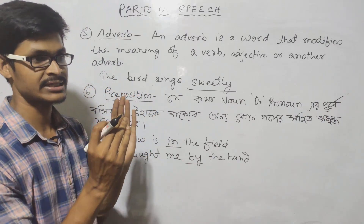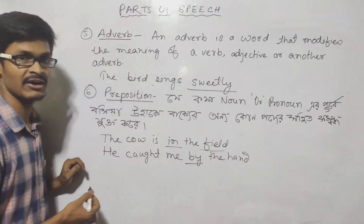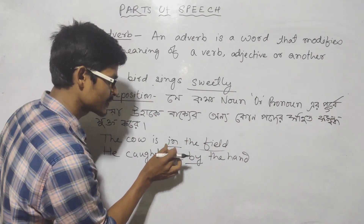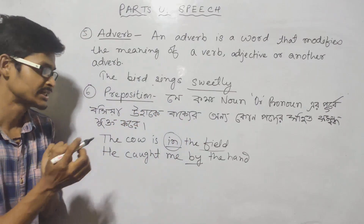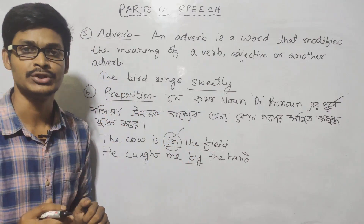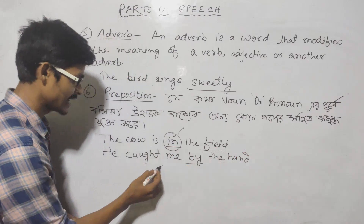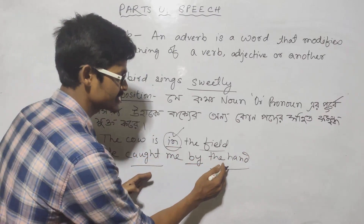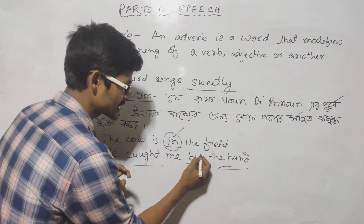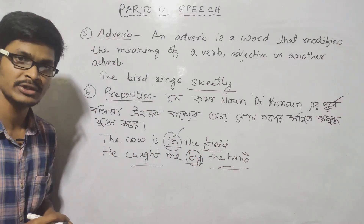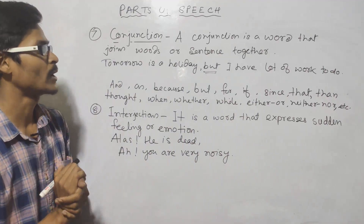Next is preposition: a preposition is a word placed before a noun or pronoun. For example, 'the cow is in the field' — 'in' is the preposition. Another example: 'he caught me by the hand' — 'by' is the preposition. Preposition comes before a noun or pronoun.